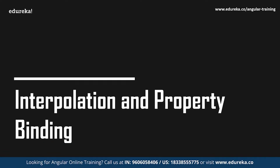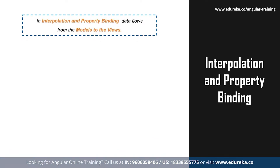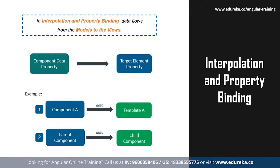In one-way data binding, data flows only in one direction — from the models to the views. One-way data binding can be of three types: interpolation, property binding, and event binding. Interpolation binding is used to return HTML output from TypeScript code, that is from the components to the views. The template expression is specified within double curly braces. Through interpolation, strings can be added into text between HTML element tags and within attribute assignments. These strings are calculated using template expressions.